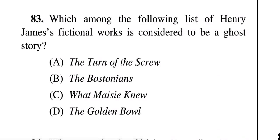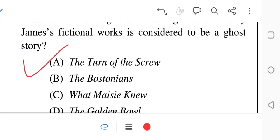Question 83: Which among the following list of Henry James's fictional works is considered to be a ghost story? Options: A — The Turn of the Screw, B — The Bostonians, C — What Maisie Knew, D — The Golden Bowl. The correct answer is A — The Turn of the Screw. Remember it — it will help you.